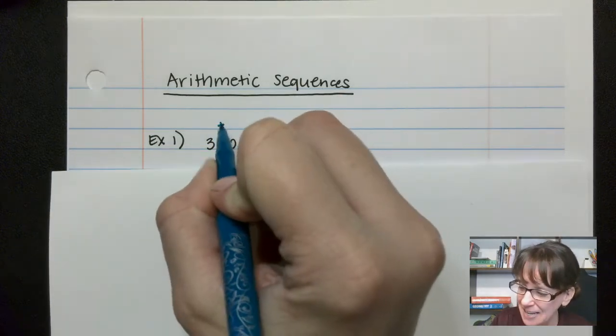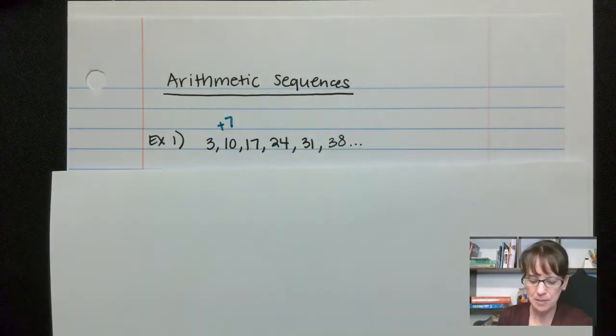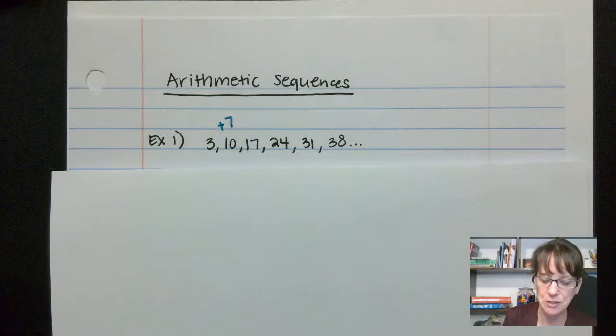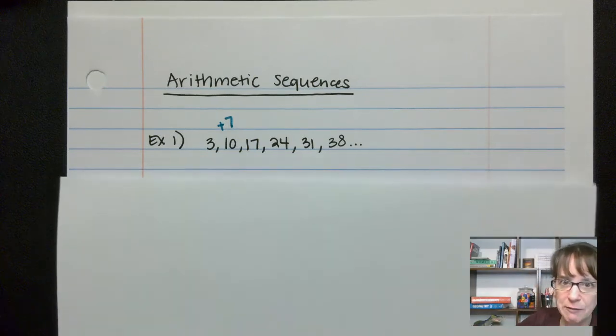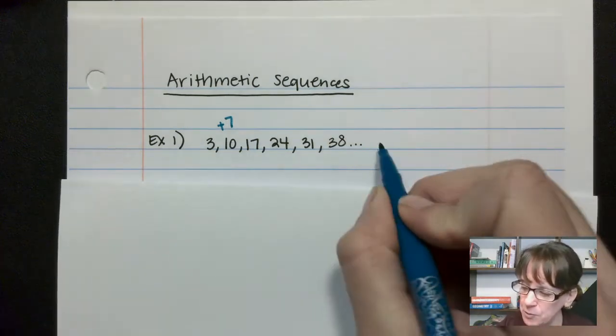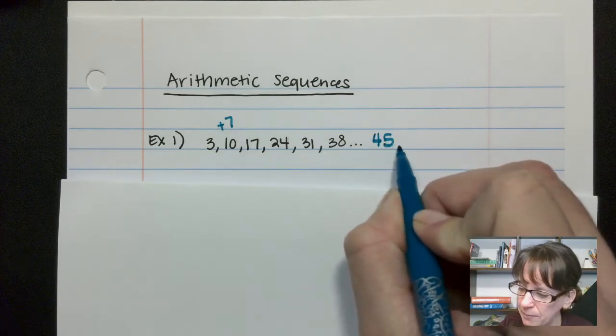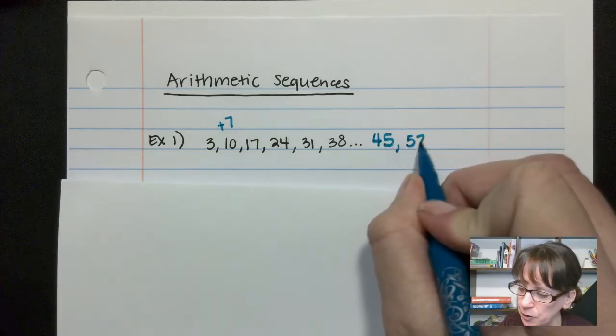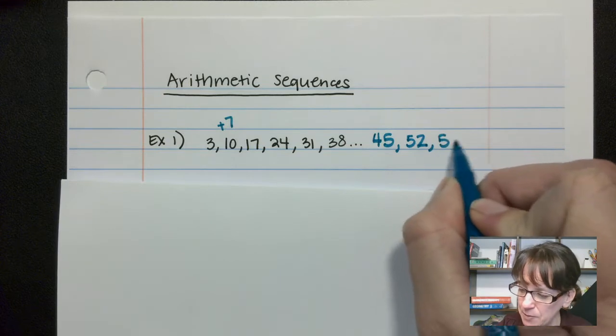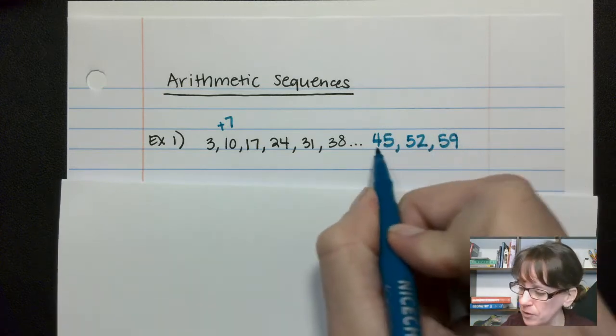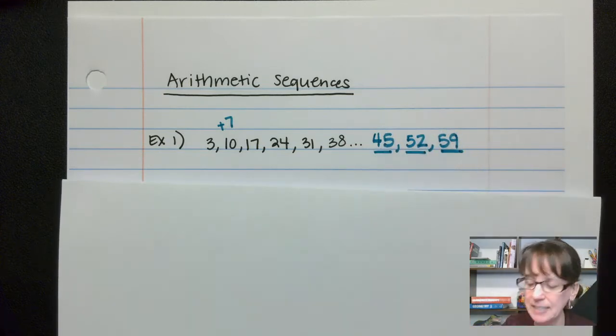So plus 7. That means my next position, if I have 38 and I add 7 to it, I end up with 45, right? So my next numbers would be 45, plus 7 would be 52, plus 7 would be 59, and so on and so forth. So now I know what my next numbers are.